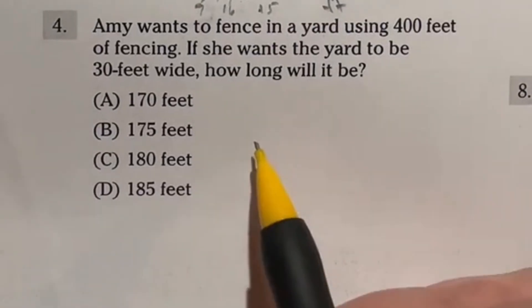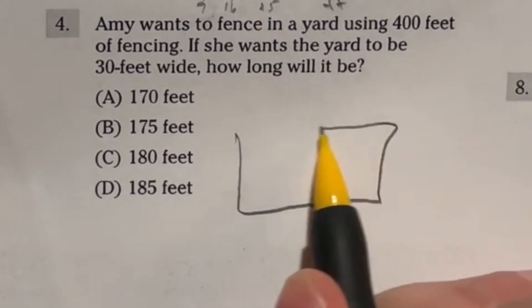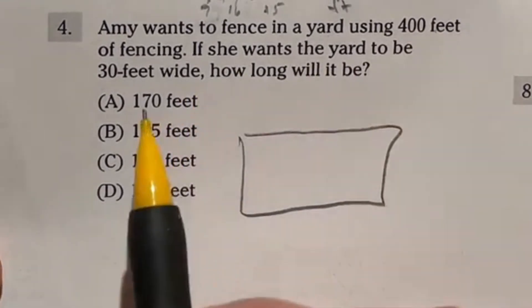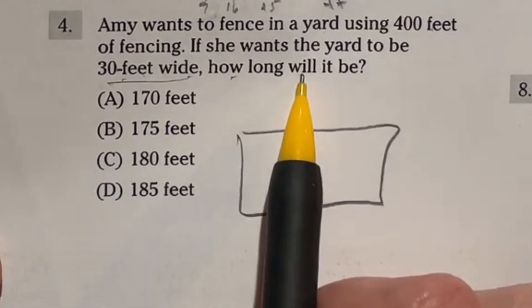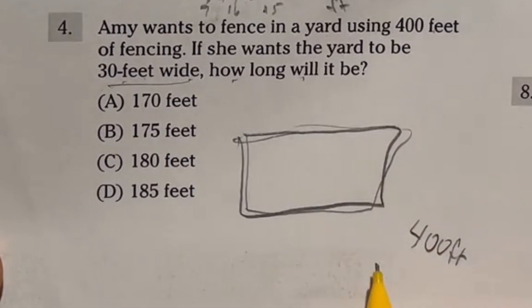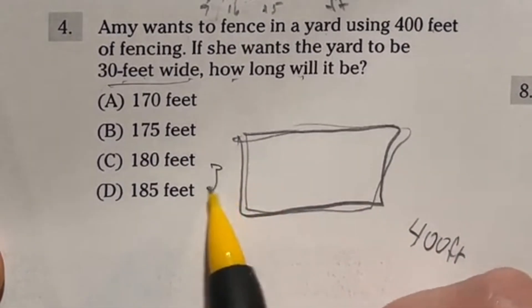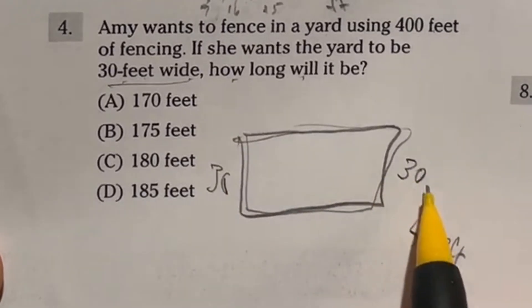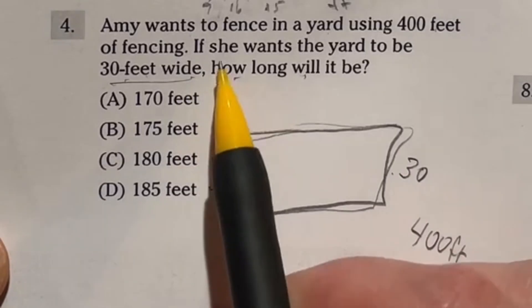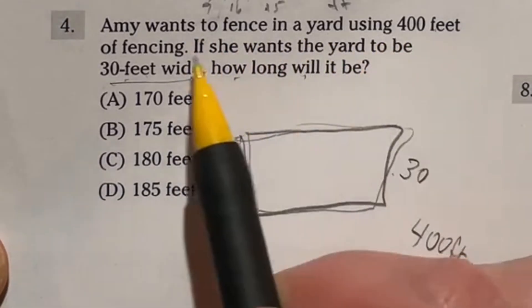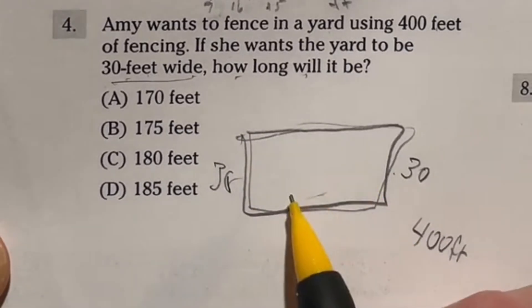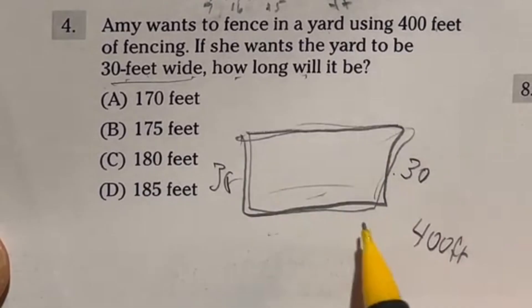Okay, so number four on the ASVAB says that Amy wants a fence using 400 feet of fencing. If she wants the yard to be 30 feet wide, how long will it be? So all together here, these four sides, we need this to be adding up to 400 feet. Now, let's take a look here. If this is 30, then we know that this also has to be 30 because it's a rectangle. Actually, does it say that it's rectangle? It doesn't even say that it's a rectangle. But it's the only way you would be able to do this. So let's assume that it is a rectangular yard.